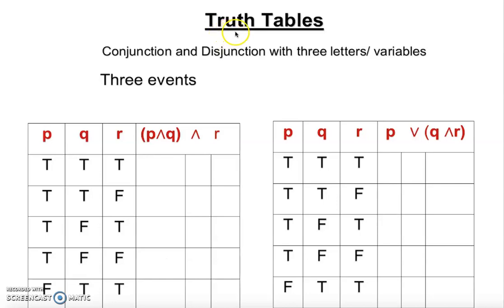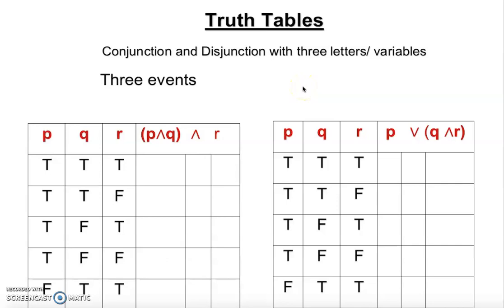In this video we are going to talk about truth tables and construct a truth table based on conjunction, disjunction, or sometimes a combination with three letters — three variables, three statements, or three events. Three events is going to give us at least eight cases.